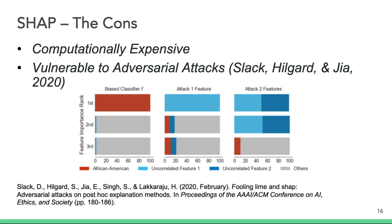SHAP comes with powerful visualization tools and has theoretical background that gives assurance that the explanations are based on sound logic and theory. In terms of cons: the primary issue is that it's computationally expensive, particularly for large datasets with a large number of features. Additionally, SHAP has been shown to be vulnerable to adversarial attacks. In a paper by Dylan Slack and co-authors, they illustrated a technique for intentionally training biased classifiers based on racial attributes in a way that was not detected by SHAP.